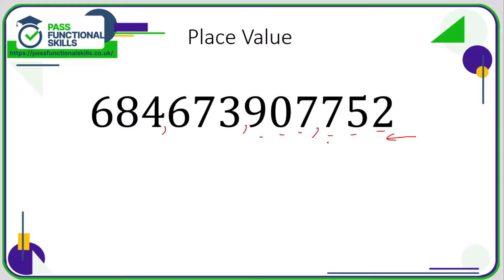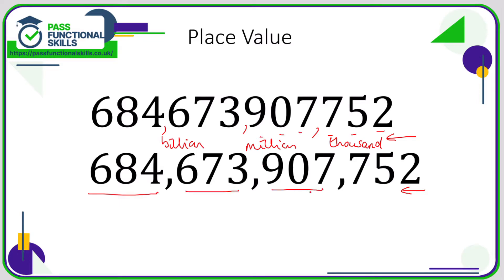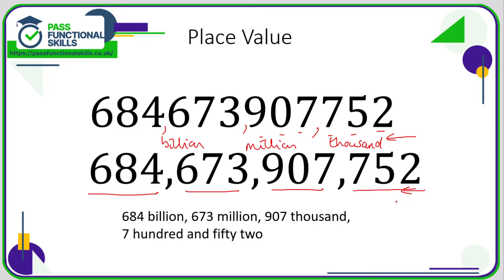It doesn't have to be a comma, it could be a space, but just breaking the number up a bit is going to make it so much easier to write down. Going from right to left, the first comma represents the word thousand, the next comma represents million, the next comma represents billion. So now all we need to do is read each group as a three-digit number: 684 billion, 673 million, 907 thousand — and then just read that final three-digit number. So this number is read as 684,673,907,752.